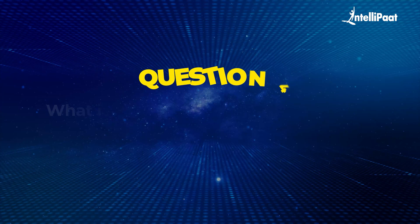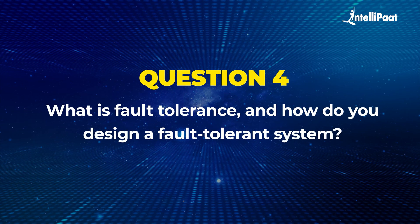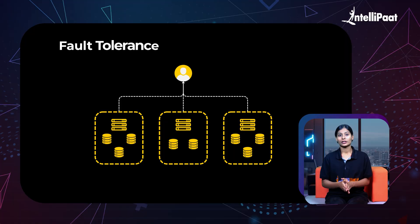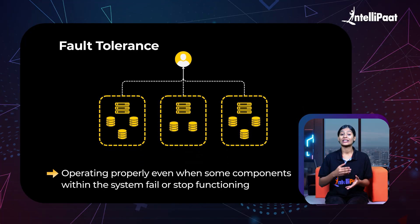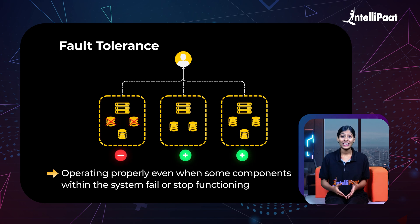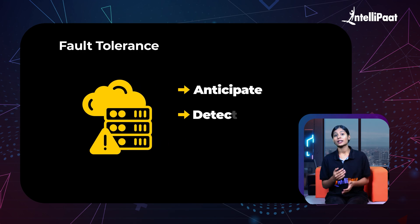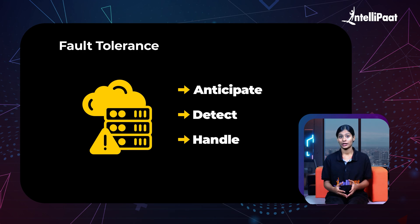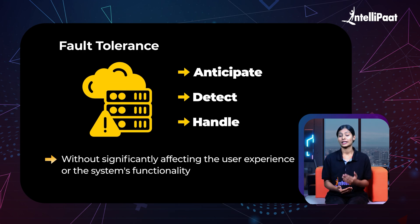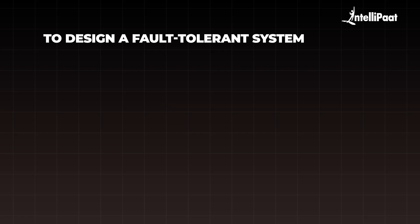Moving on to our next question: what is fault tolerance and how do you design a fault-tolerant system? Fault tolerance is the ability of a system to continue operating properly even when some components within the system fail or stop functioning. A fault-tolerant system must be designed in such a way that it can anticipate, detect, and handle failures gracefully without significantly affecting the user's experience or the system's functionality.